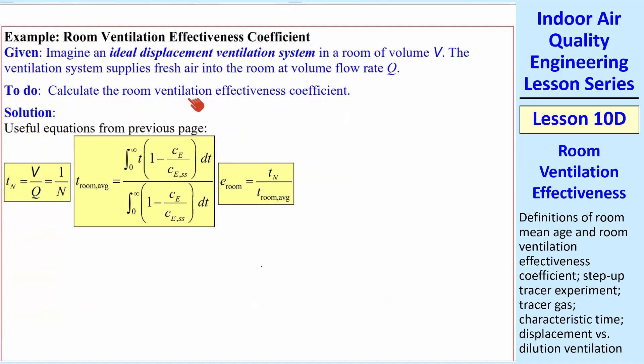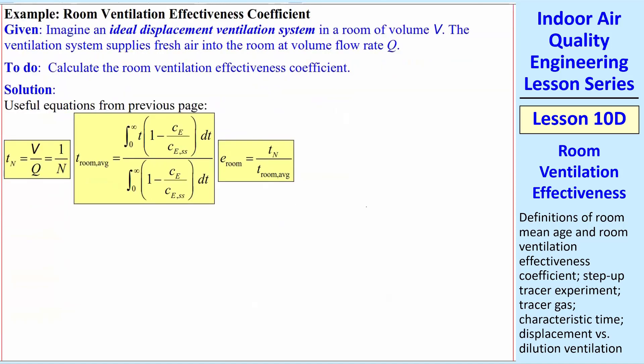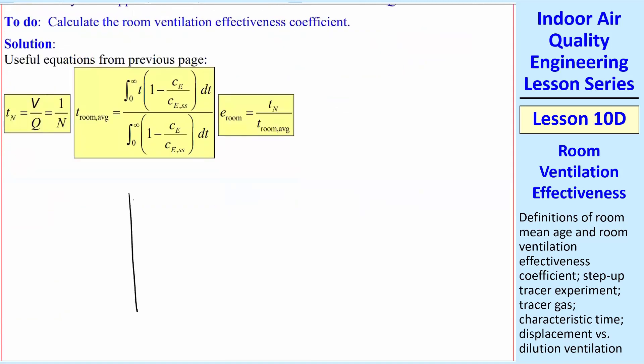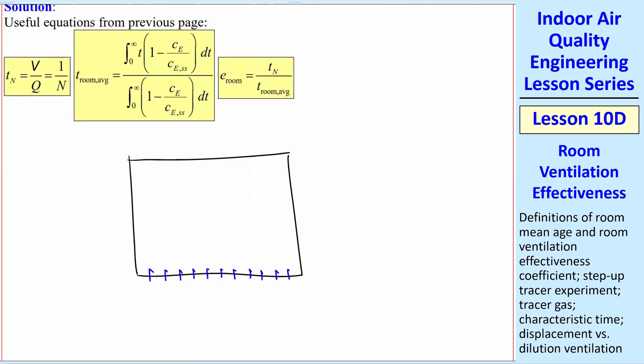Let's do an example. You have ideal displacement ventilation in a room of volume V, volume flow rate Q. Calculate the room ventilation effectiveness coefficient. We're talking about ideal displacement ventilation. So let's review quickly what we mean by that. Best example of that would be if I had a room with evenly distributed tiny holes on the floor where the air is coming in, supply air Q. And then the exhaust would be coming out little holes in the ceiling. And there's no mixing going on at all. So you have at some time T, this region. You'd have C equal constant here. And you have C equal 0 here. So the stale air is actually the clean air.